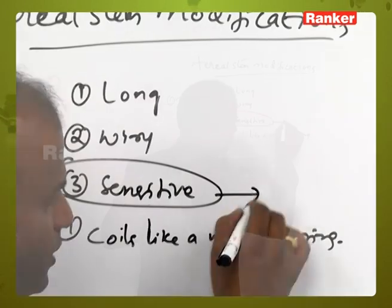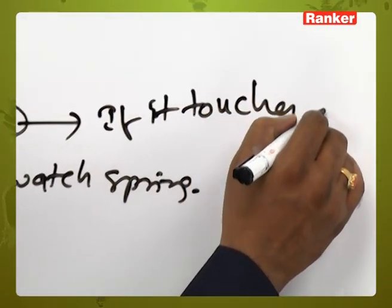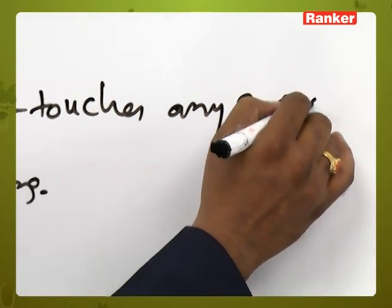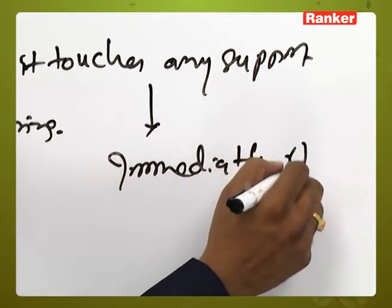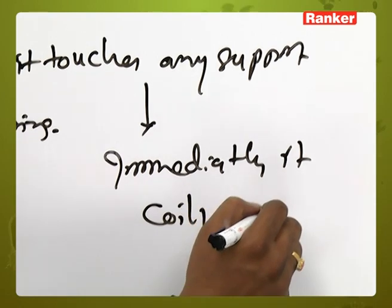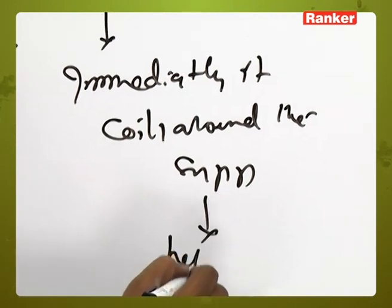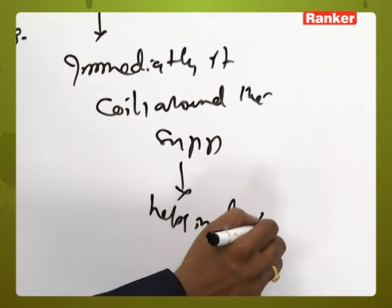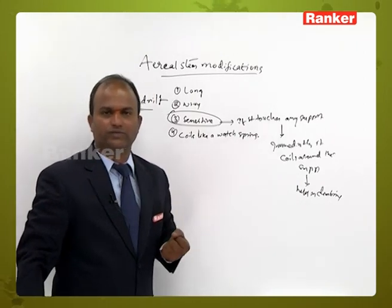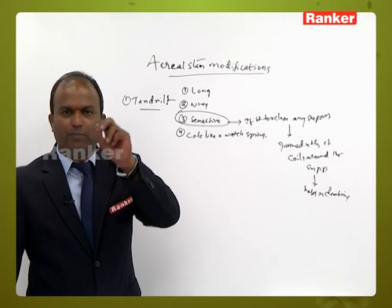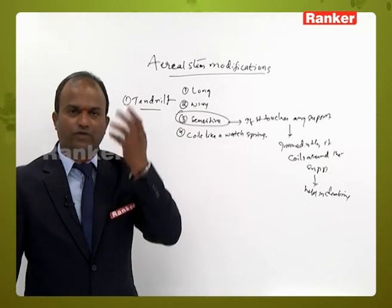As it is a sensitive structure, if it touches any support, it immediately coils around the support and helps in climbing. Due to this, the plant can receive sufficient sunlight and prepare its own food materials by means of photosynthesis.